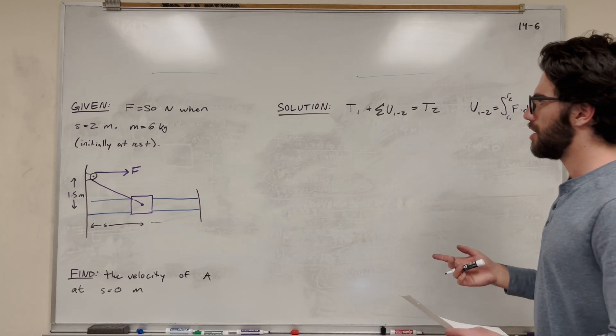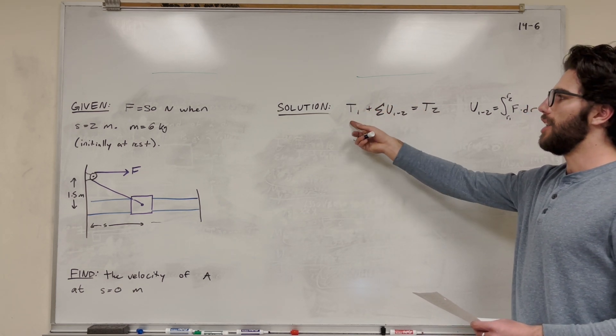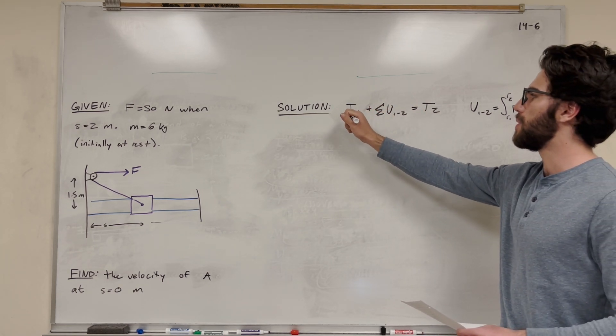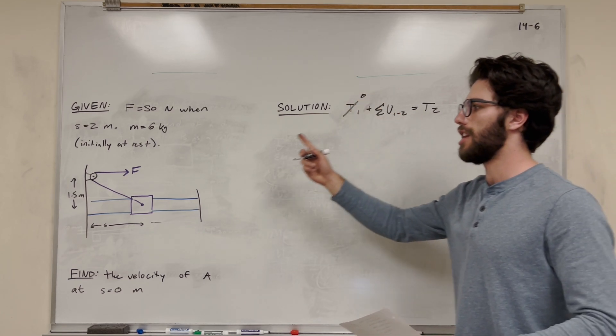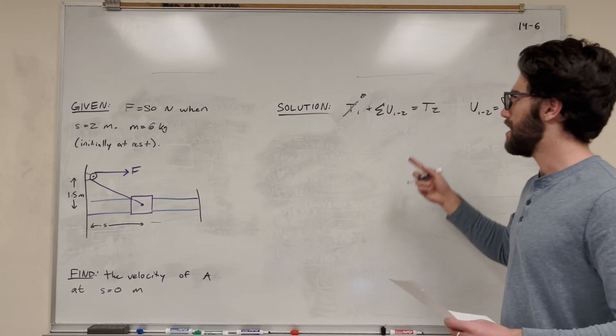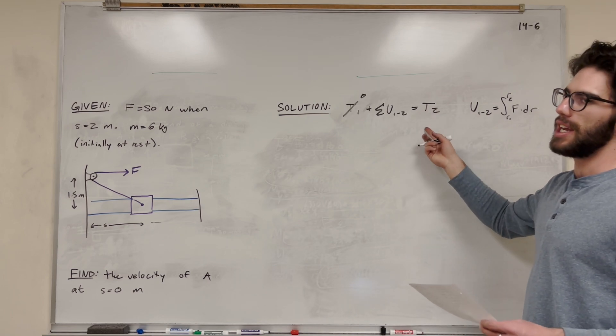So to do that, we're using work-energy, right? Basically, it's just saying initial energy, which is going to be 0 because we're at rest initially, plus the changes in energy, which is going to be work in this case, is going to be equal to our final energy, which is going to be kinetic energy.